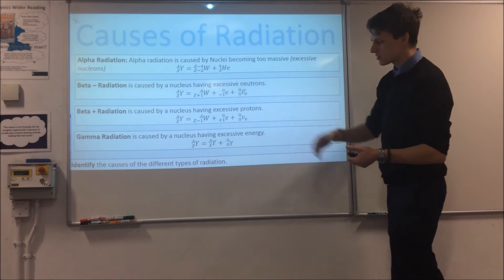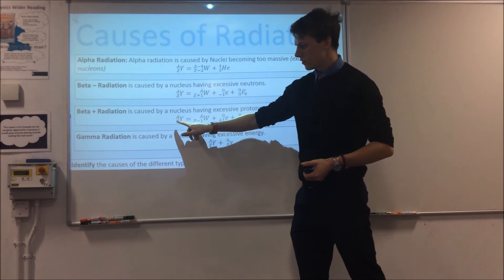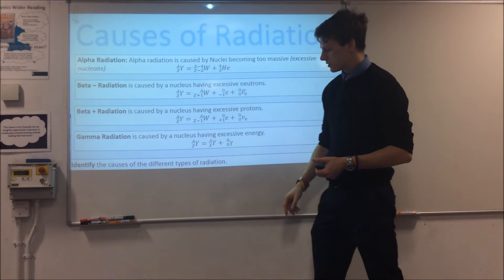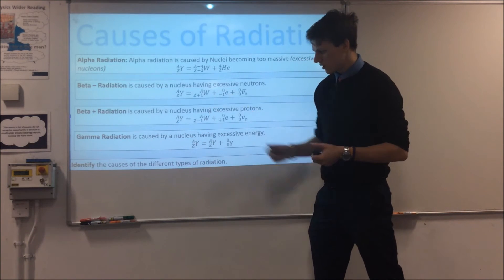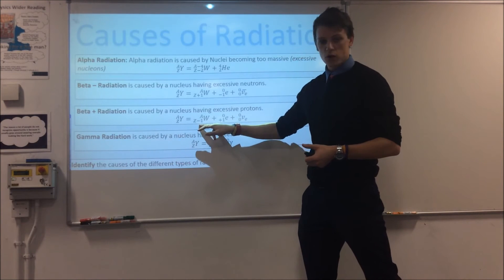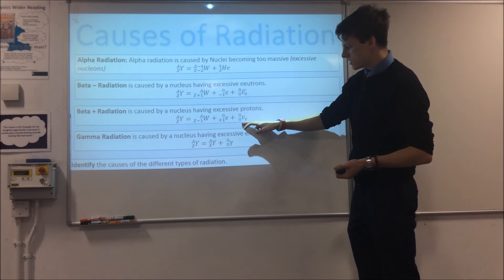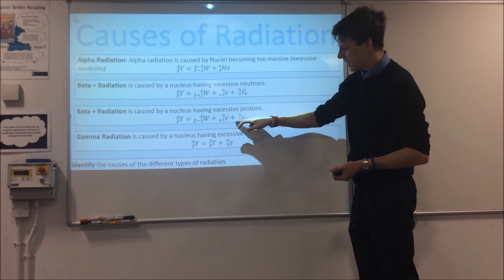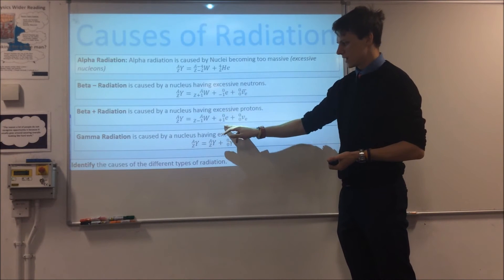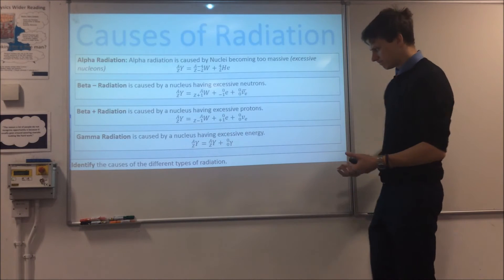For beta plus: a positron is produced, meaning a proton has been converted into a neutron. The nucleon number stays the same, but the proton number decreases by one because you've lost one proton. We also need an electron neutrino to balance the electron lepton number of the positron, which is minus one.